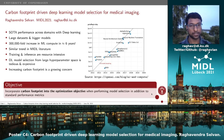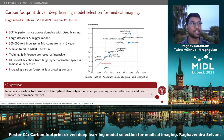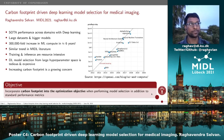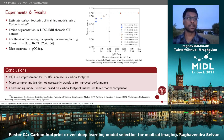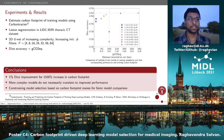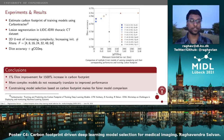The objective in this short paper is basically to propose incorporating carbon footprint into the optimization objective when we perform model selection. This is of course in addition to other standard performance metrics that we use. We demonstrate this using a basic experiment on segmentation of lesions from the LIDC dataset using the 2D U-Net model.